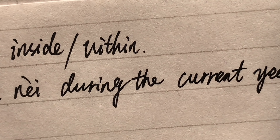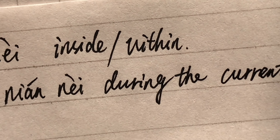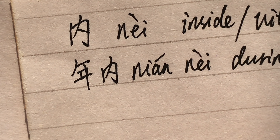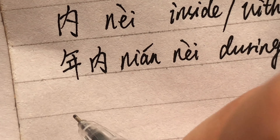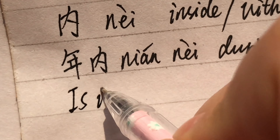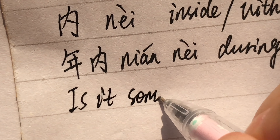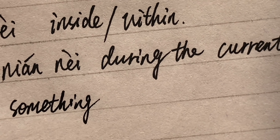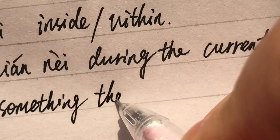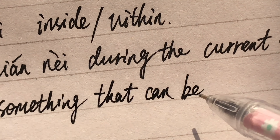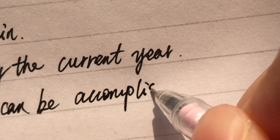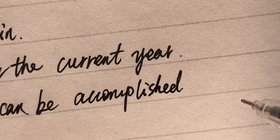Here is a sentence: Is there something that can be accomplished in this year? 有没有什么目标是可以在年内完成的?